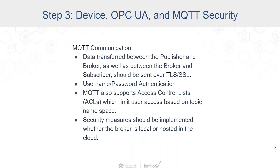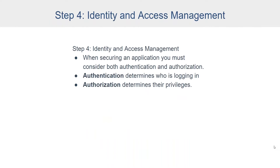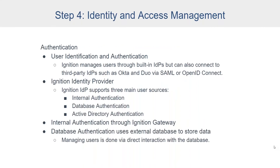We talk a lot about MQTT in other webinars — I highly recommend you check those out. On to step four: identity and access management. When securing an application, you need to consider both authentication and authorization. Authentication is determining who's logging in — who can get onto the system — often via usernames and passwords. Authorization is, once they've logged in successfully, what privileges do they have? What can they do once they're logged in? Let's look at these two concepts within the scope of Ignition, starting with authentication.